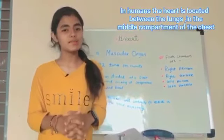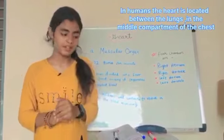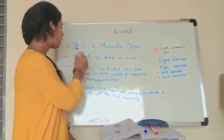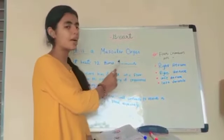Hi everyone, today I am here to explain about the heart and how it works in human beings. As we all know, the heart is a muscular organ and it beats 72 times per minute.